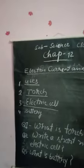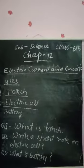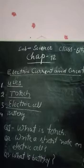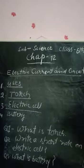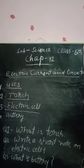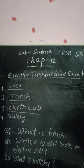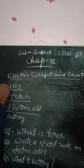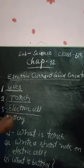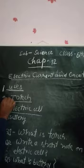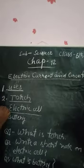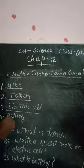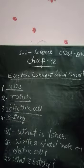Good morning class, I am Sanjay sir. Today we will discuss chapter 12, electric current and circuit. First in this lesson we have to discuss about the point: what are the uses of electricity? The second point is what is torch, and the third point is electric cell, and fourth is battery.